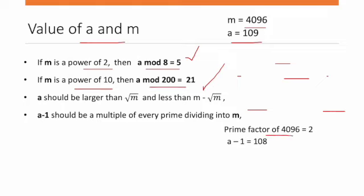The prime factors of 4096 are just 2. And a minus 1 is 108, which is divisible by 2, so this condition is satisfied.